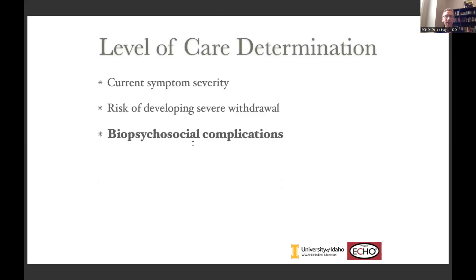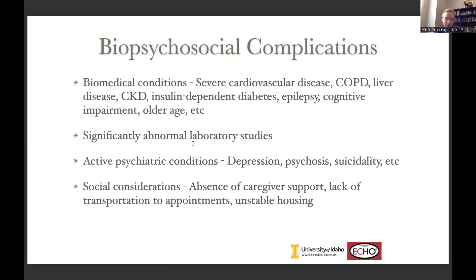The third category is biopsychosocial complications. What other medical problems do they have? If a patient has a history of atrial fibrillation with rapid ventricular rate, severe coronary disease, or a history of epilepsy, it's going to be challenging to manage them appropriately in the outpatient setting and you might consider inpatient treatment. Lab studies showing acute kidney injury or electrolyte abnormalities may benefit from inpatient treatment, as might active psychiatric conditions. And something we don't think about often: what's their social circumstance? Are they unhoused? Do they not have a car? Do they live alone? You have to ask yourself: is it safe for this person to be going through withdrawal on a sedating medication, driving themselves to the visit, living alone?